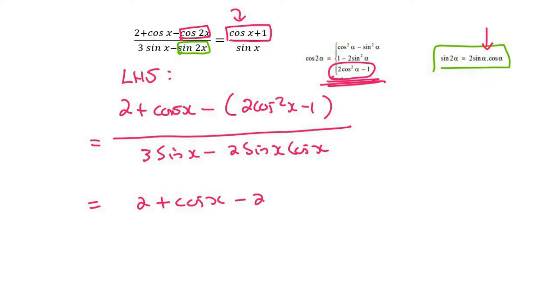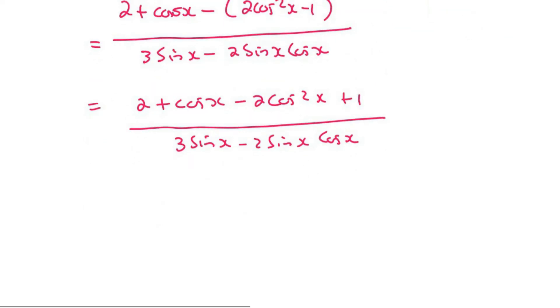So then at the top, we're going to get 2 plus cosx minus 2 cos²x plus 1. And then at the bottom, we're not really going to do anything over there. Then at this step, once you've gotten all the brackets away and all of that, then it's factorizing. But we still need to simplify. So 2 plus 1 is 3. So I'm just going to change that to 3 plus cosx minus 2 cos²x.